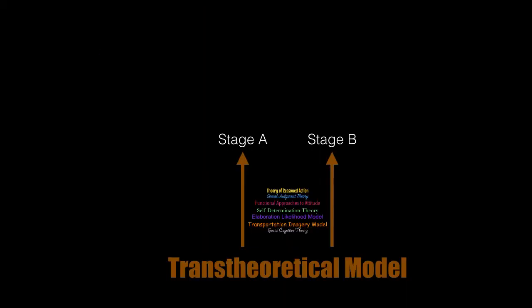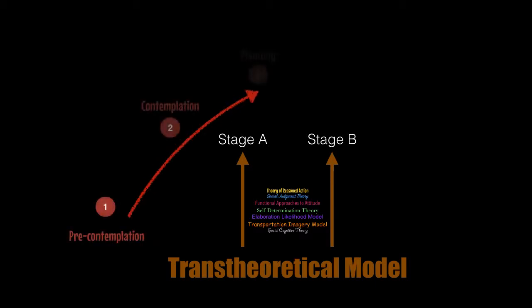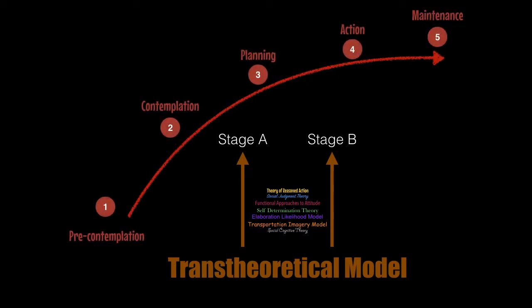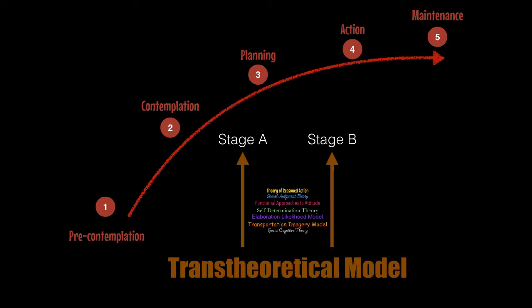I set my model in between stages of the trans-theoretical model, which considers behavioral change a multi-step process that goes from a pre-contemplation stage all the way to maintenance. Instead of explaining behavioral change across all stages, my model focuses on change occurring between two stages, say, contemplation and planning, or pre-contemplation and contemplation. What matters is that each new message could take a different approach regardless of the one taken a step before.